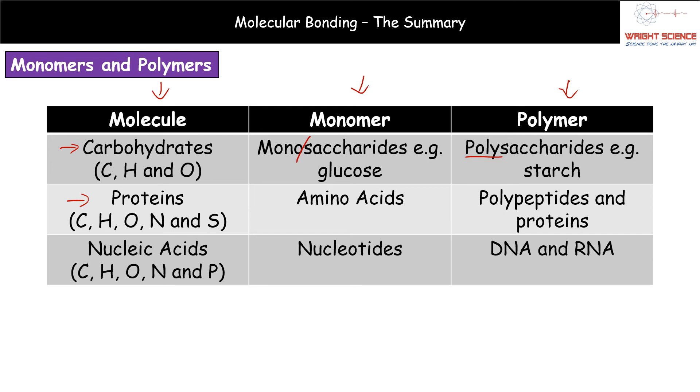The third molecule we need to know, the nucleic acids. Again, carbon, hydrogen and oxygen. We've got those same three elements. But our nucleic acids also contain nitrogen and phosphorus. So, make sure that you do know, not only the names of the molecules, but also the elements we find in each of them. In terms of our monomer for our nucleic acids, they are the nucleotides and the polymers. Two options here. DNA or RNA.